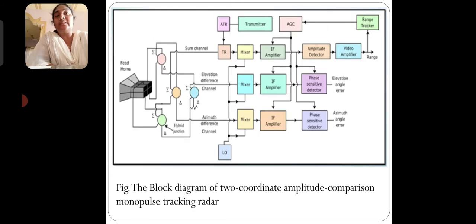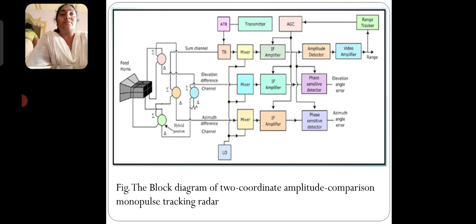You can see that the magic T feed uses a horn, and after that signals are given to the sum channel, elevation difference, and azimuth difference channels — from which we find the elevation angular error, and the azimuth angular error and range.